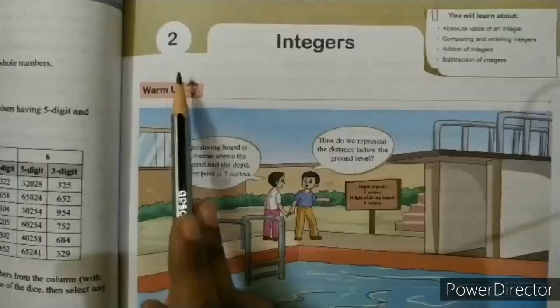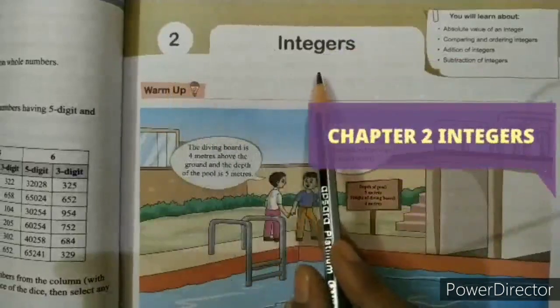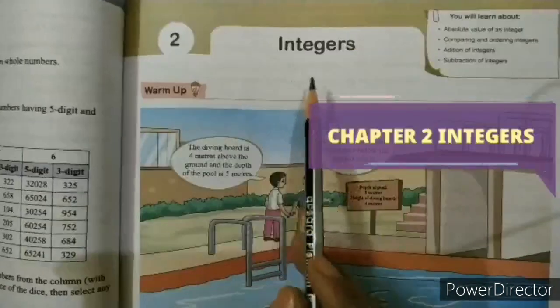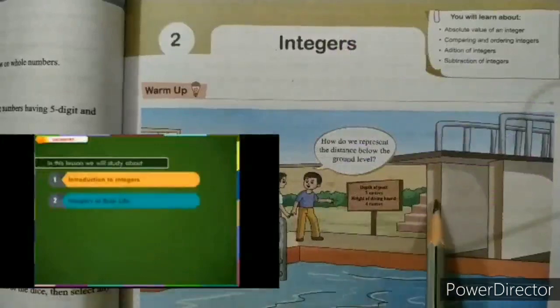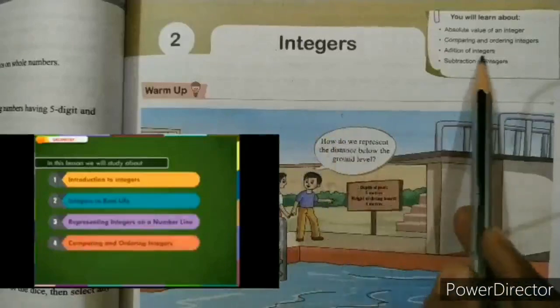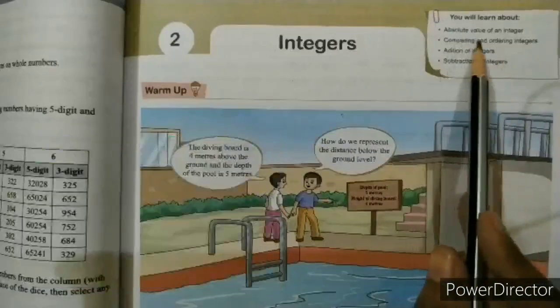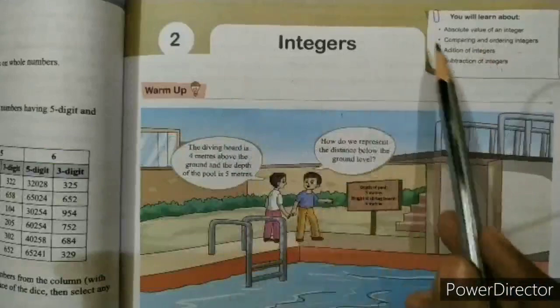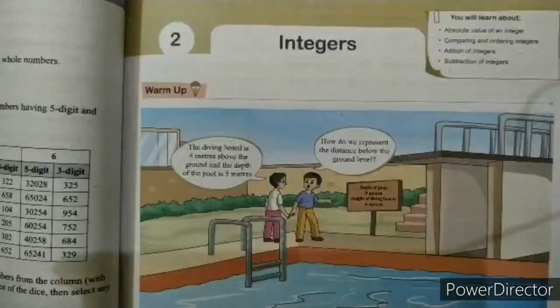You will get all the videos that we had covered so far. Today we are going to start a new chapter — Chapter Number 2: Integers. This chapter is something new for you, so be careful. In this chapter we will learn about: introduction to integers, representing integers on a number line, comparing and ordering integers, addition and subtraction of integers, and absolute value of integers. So let's start.